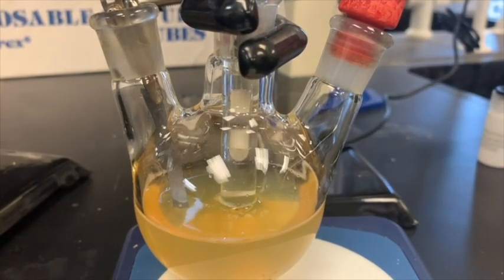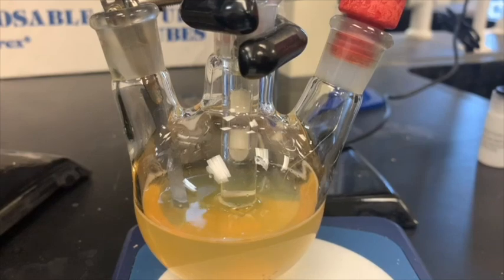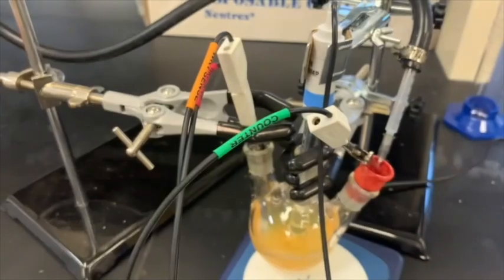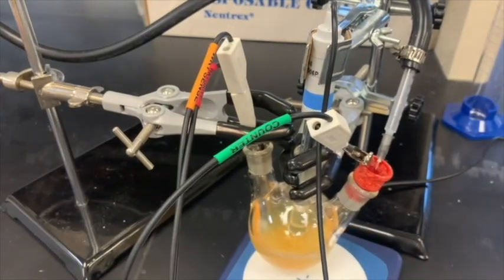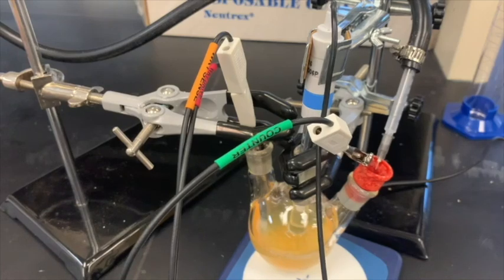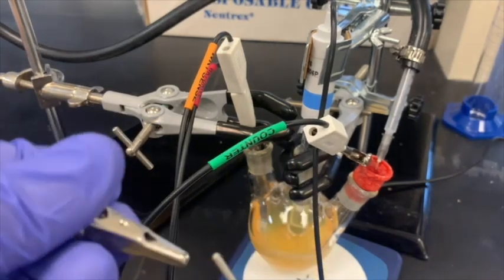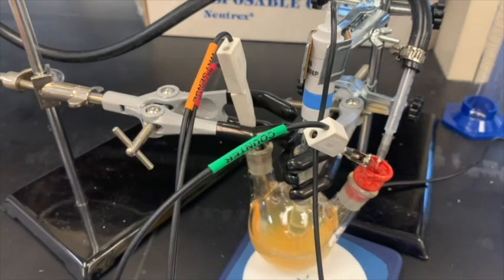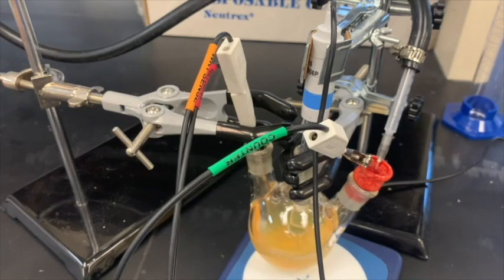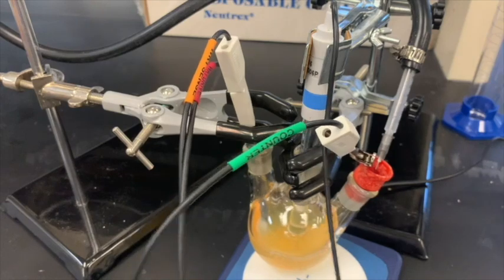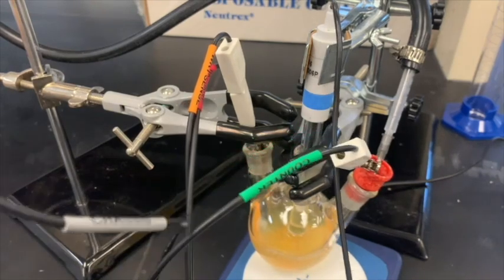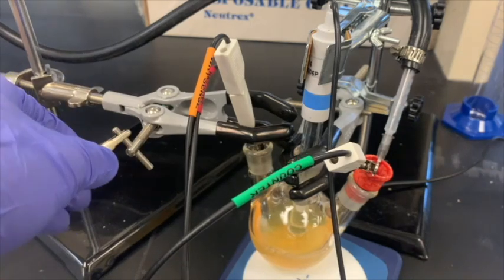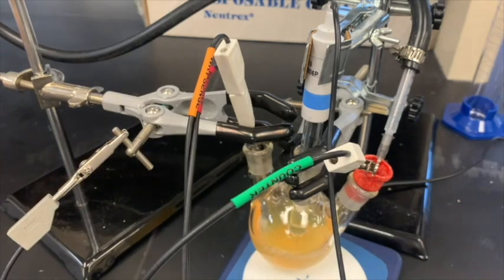Next, we should add our potentiostat clamps to the electrodes, which are now in place. The work one and work sense goes to the graphite electrode, while the counter electrode goes to our platinum wire. Finally, our reference electrode will go to the silver-silver chloride electrode in the middle neck of the flask. The last clamp is the gray chassis electrode clamp, and this can go to any piece of metal that is on the lab bench. In this case, it goes to one of the screws tightening the clamps.